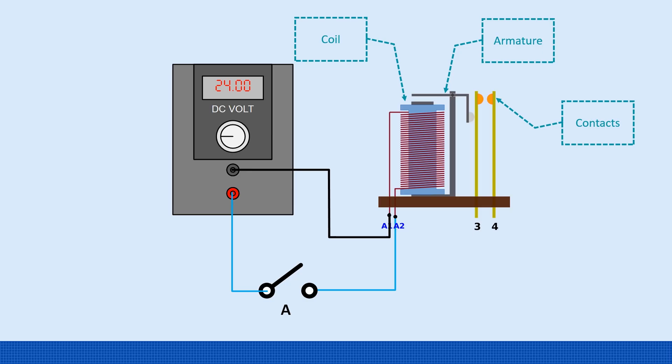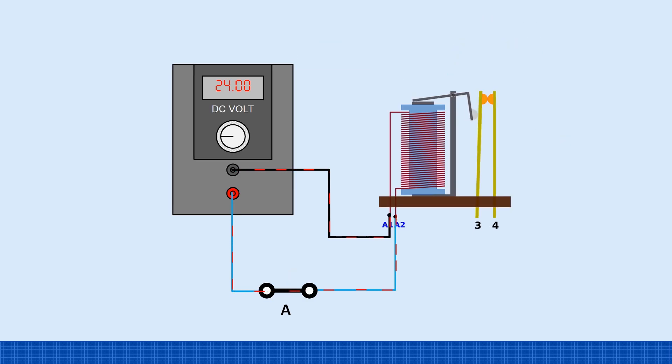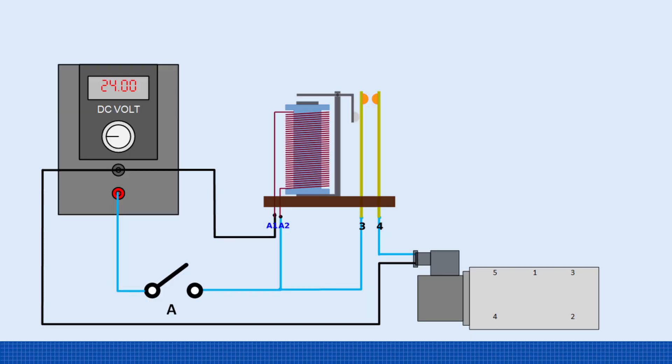When we apply power to the coil, it will generate a magnetic field and pull the armature down. The armature pushes the contacts together, and the contacts act like a closed switch.